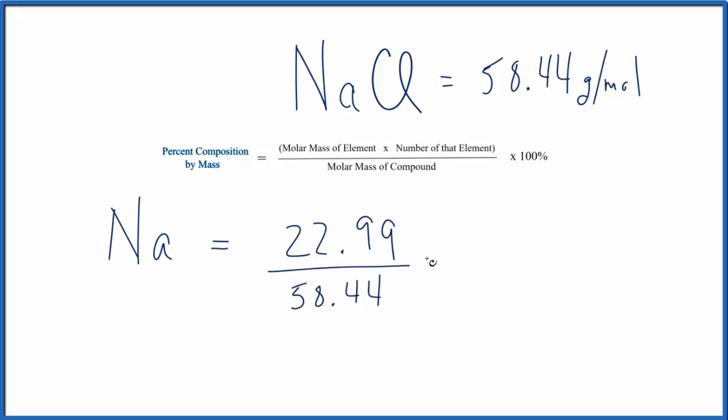We multiply that by 100. So we're dividing 22.99 by 58.44 times 100, and we get 39.33%. So sodium is 39.33% by mass of the sodium chloride compound.